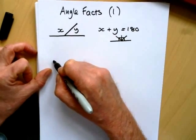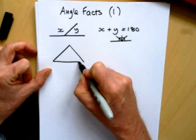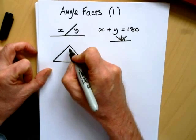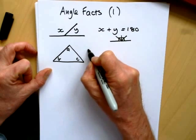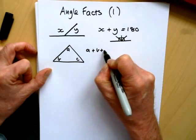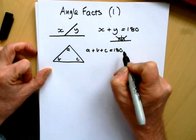Now, the second angle fact that comes in a lot is to do with triangles. For the first fact, we need to know about a triangle. So the angles inside the triangle, let's call them A, B and C, always add up to 180 degrees.